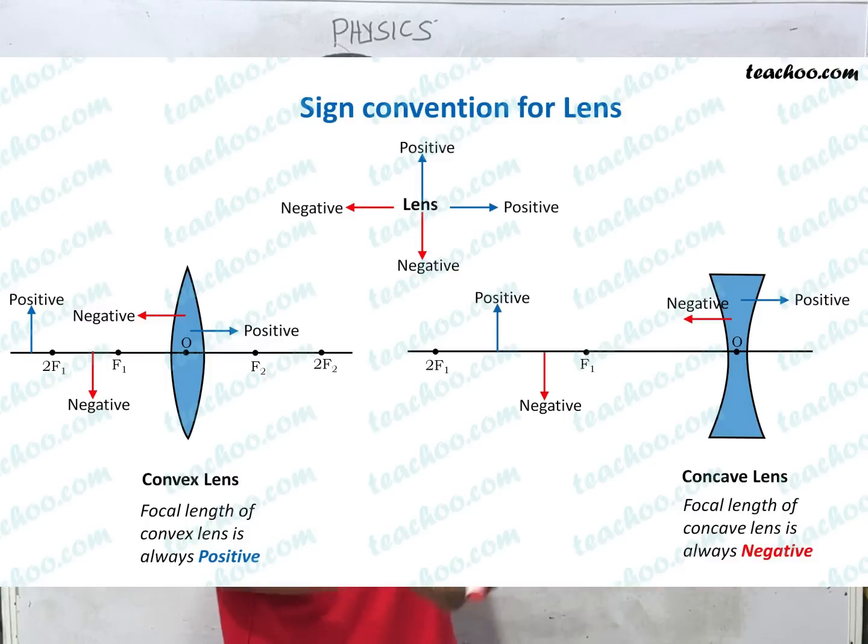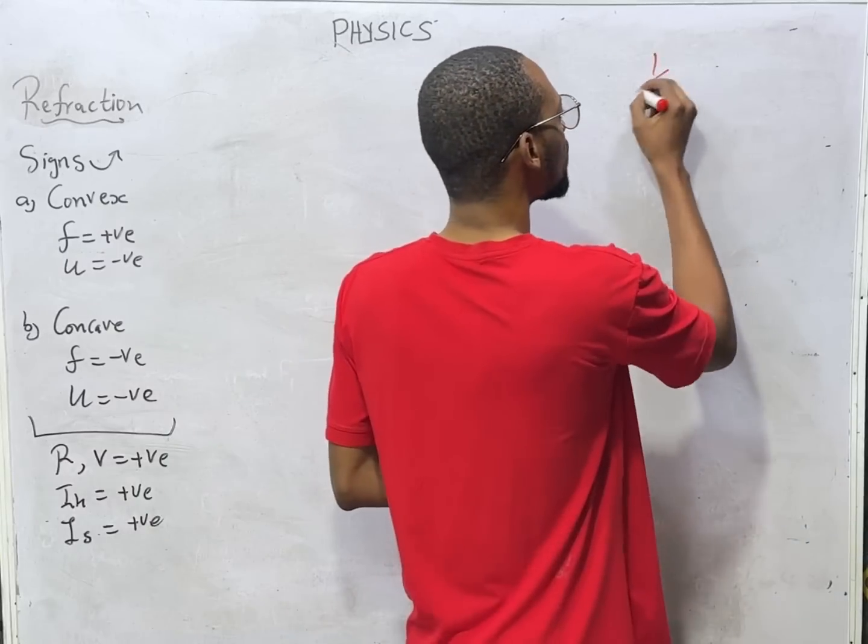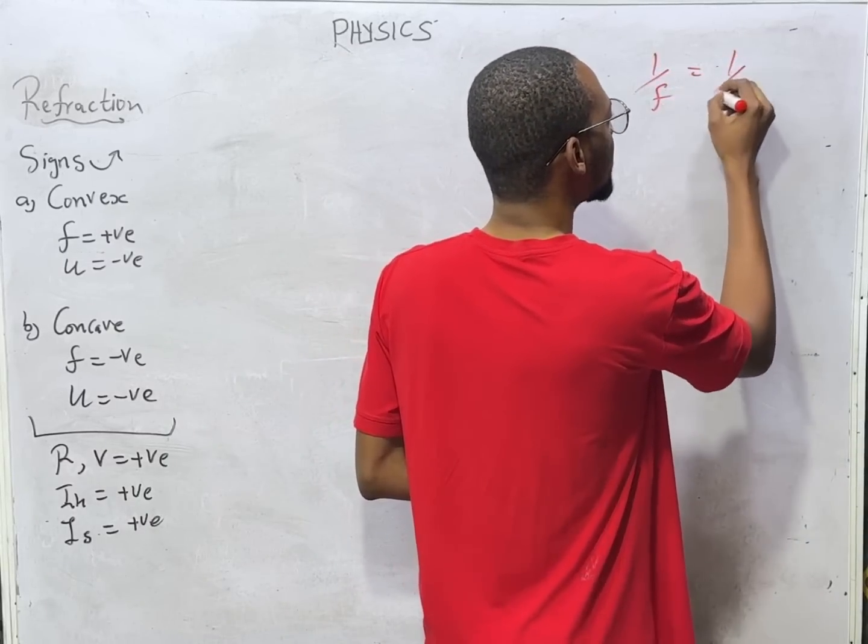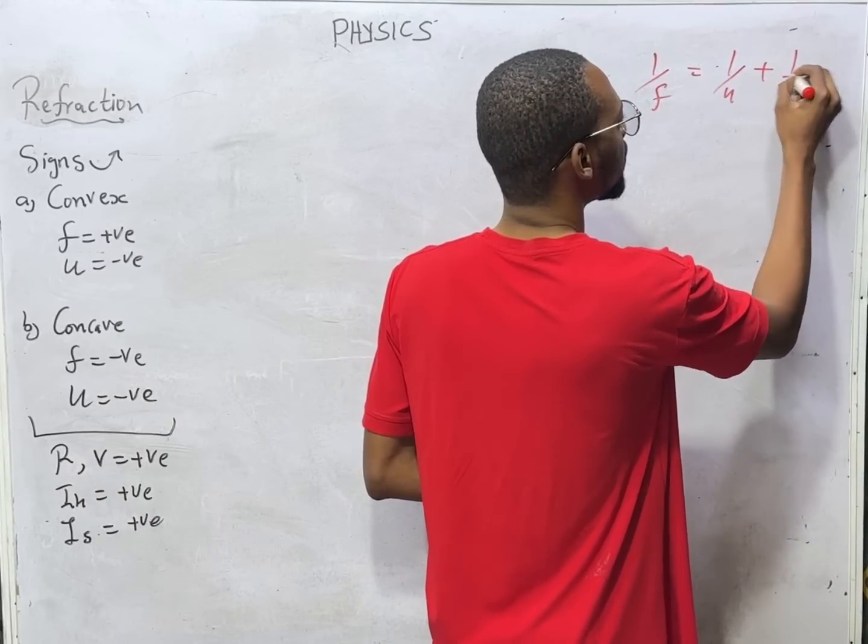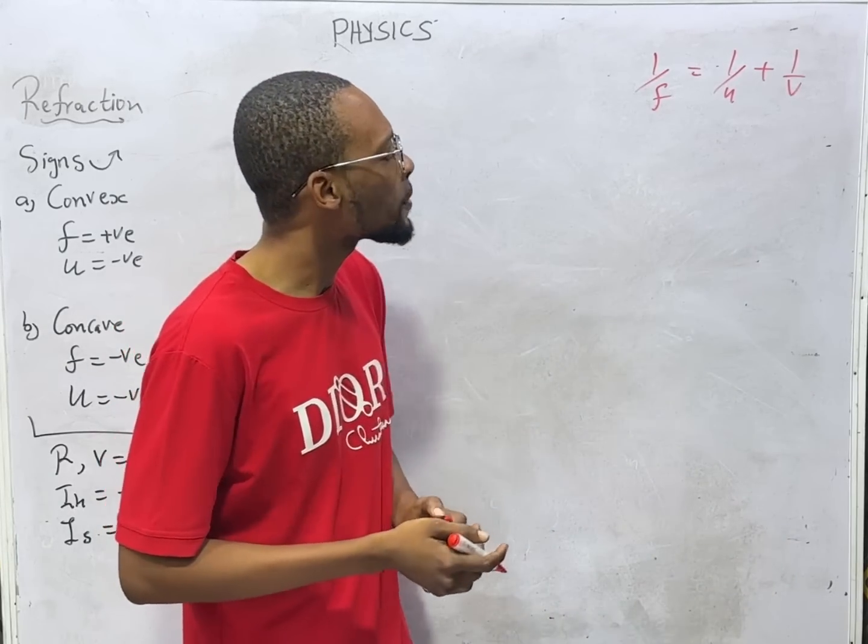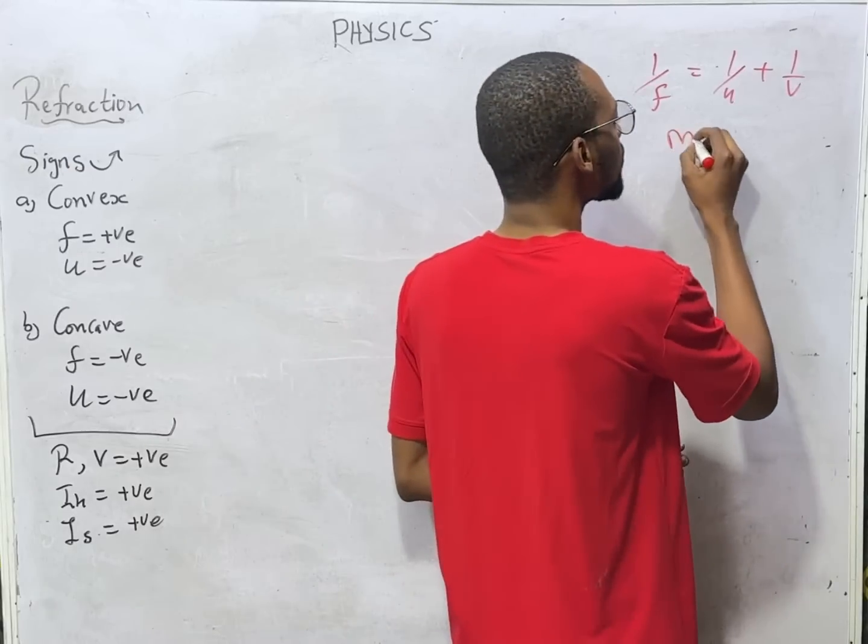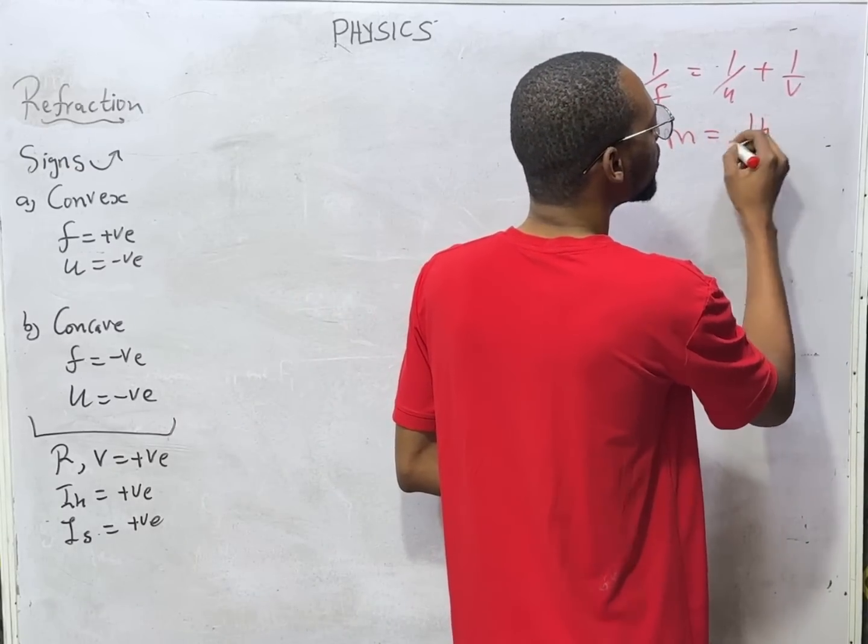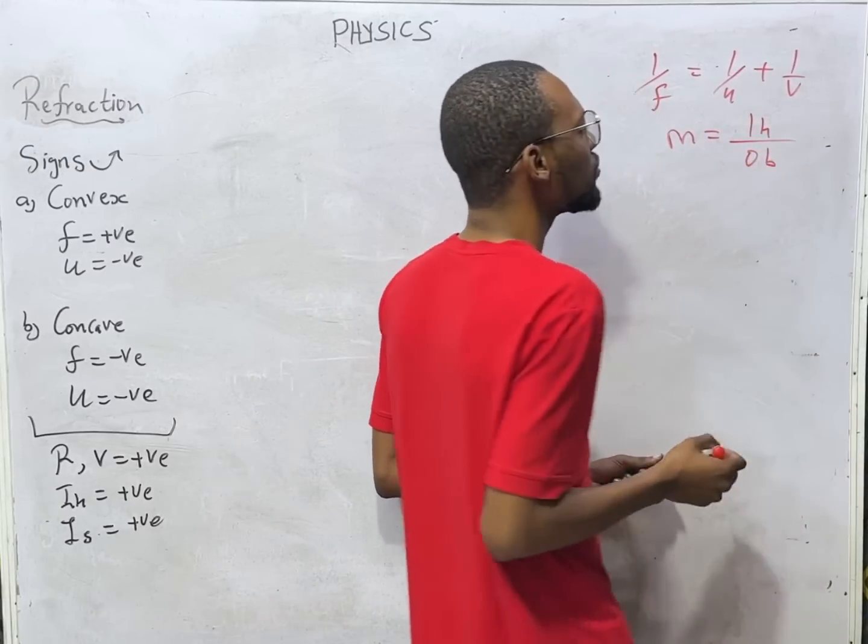And the formula also does not change. It is 1 over F equals 1 over U plus 1 over V. This is lens formula. Same as mirror formula. And magnification equals image height over object height.